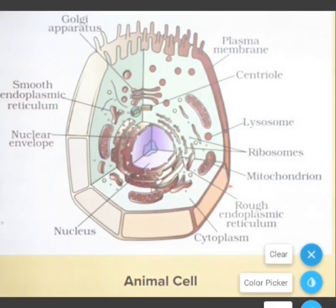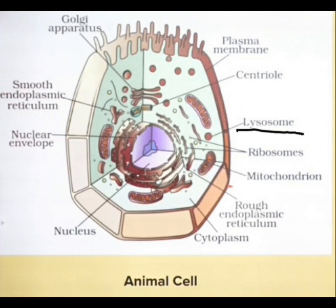Now let us talk about lysosomes, which are known as the suicidal bags. These are the lysosomes. They have digestive enzymes in them. When the cell is dead, the lysosomes burst out, the digestive enzymes are released, and they digest the entire cell — that is why they are known as suicidal bags.